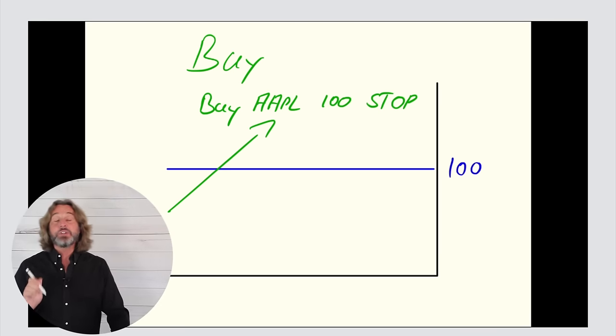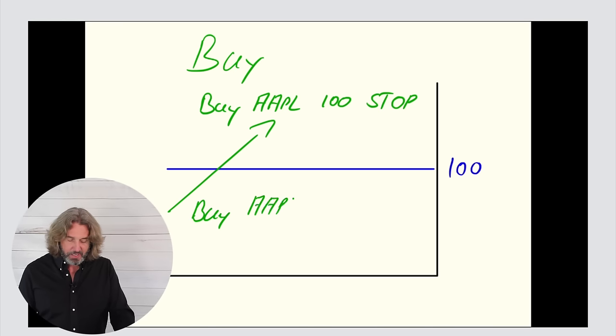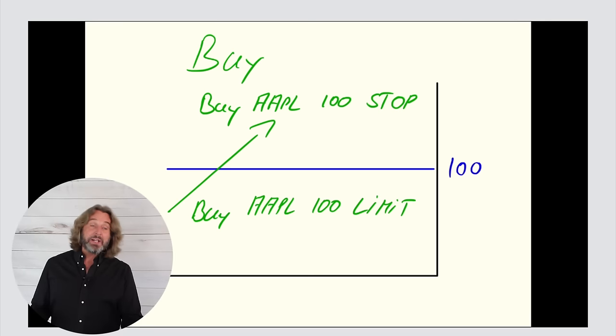So on the other hand, if you want to buy Apple and want to pay a maximum of $100, you would say buy AAPL Apple at 100 limit. So what is the main difference between a stop and a limit order?